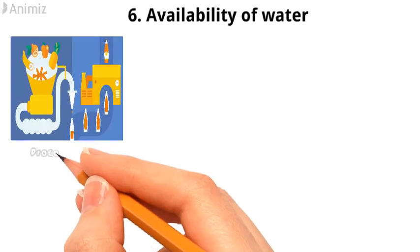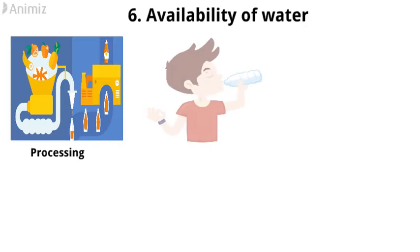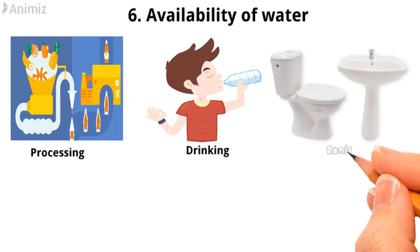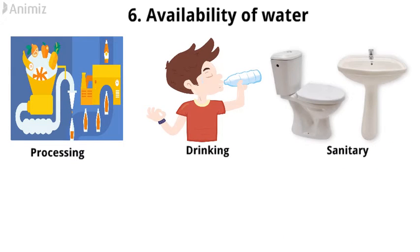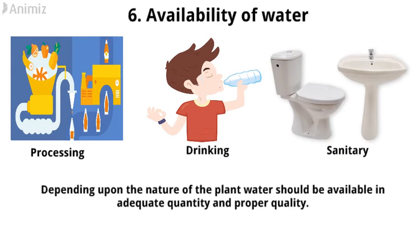Factor number 6: Availability of water. Water is used for processing, drinking, and sanitary purposes. Depending upon the nature of the plant, water should be available in adequate quantity and proper quality.